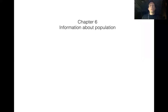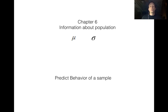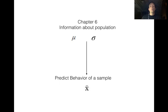Chapter 7 begins almost as an afterthought of where Chapter 6 left off. In Chapter 6, we found that if somebody gives us information about a population — like an average and a standard deviation — we can use that to assess or predict the behavior of a sample taken from that population. That's what the central limit theorem does.